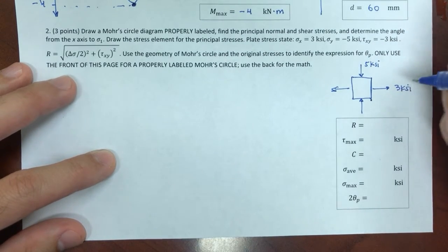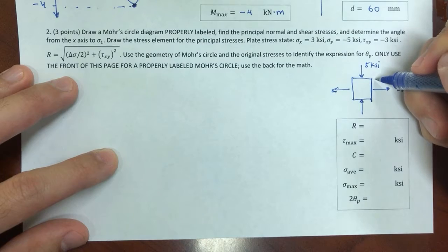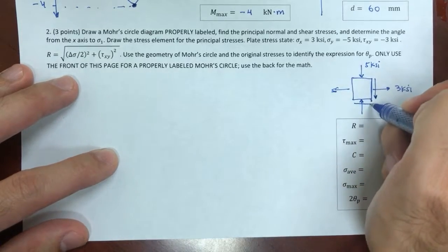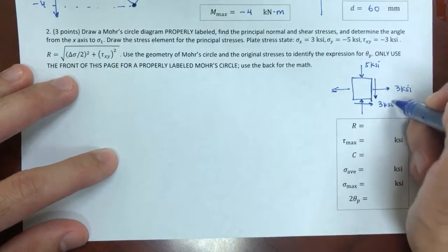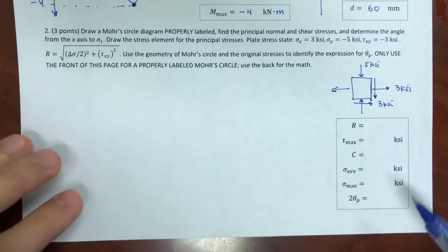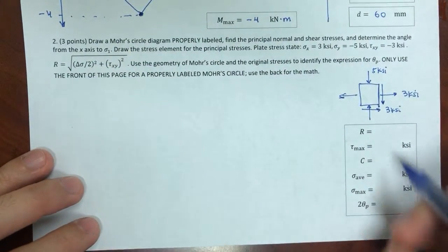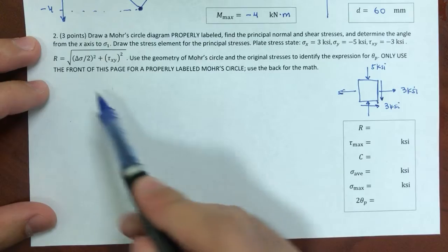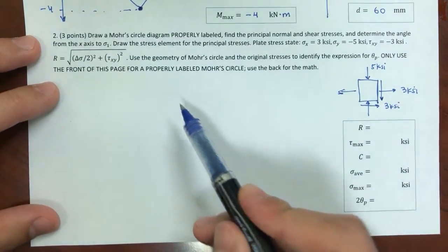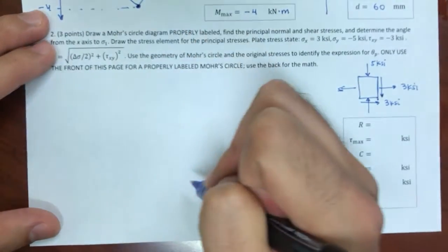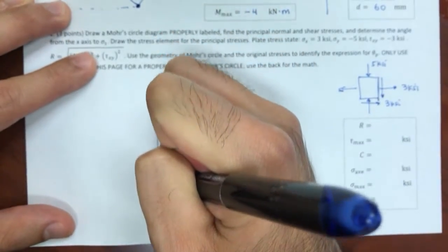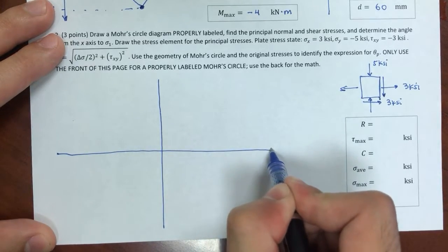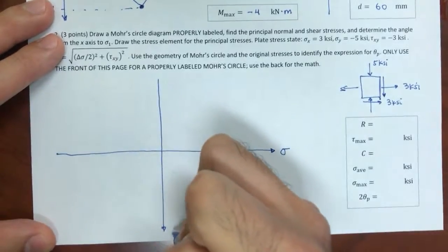A negative τ means that on the right face of the stress element, the shear vector causes clockwise rotation. I'll sketch the stress state: 3 ksi in x, minus 5 ksi in y, and minus 3 ksi shear. I'll use the full page for a properly labeled Mohr's circle. The axes are sigma (horizontal) and tau (vertical).